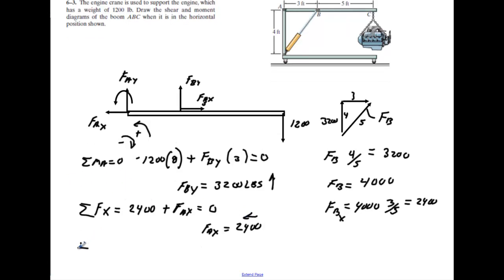Okay, and then when we sum forces in the Y, then we'd get negative 1,200 coming down plus the F_B_Y, and when we did this right here we know it's 3,200, plus F_A_Y equals 0. And we'll find out very quickly that F_Y at A must equal 2,000 and that must be going down.